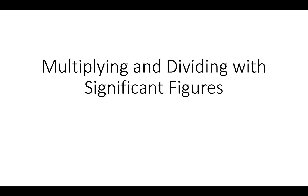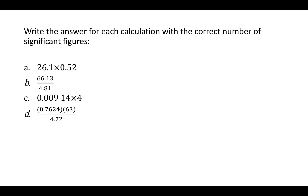Multiplying and dividing with significant figures. Multiplying and dividing with significant figures is similar to adding and subtracting in the sense that your answer can only be as precise as the least precise measurement you're combining. But it's different from adding and subtracting: with adding and subtracting you look at how many digits there are to the right of the decimal place, but in multiplying and dividing you look at how many significant figures there are in the whole number altogether.